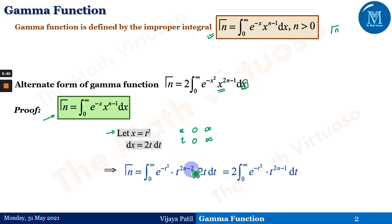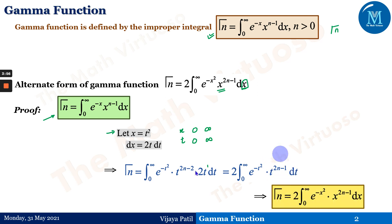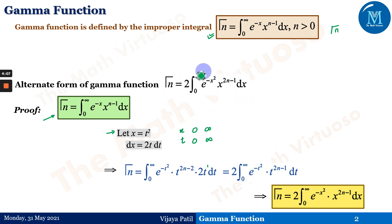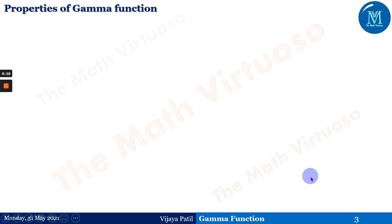After substitution, t to the power 2n minus 2 combined with t to the power 1 gives us 2 times the integration from 0 to infinity of e to the power minus t squared, times t to the power 2n minus 1, dt. Replacing t by x (not a substitution, just renaming the variable), we obtain the alternative definition of the gamma function.